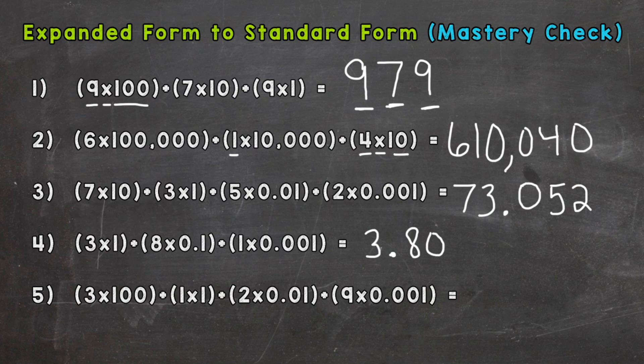Lastly here, we have a three with a value of 300, or a three in the hundreds place. We do not have any tens, we have one in the ones place, decimal, we do not have any tenths so we need a zero there, two in the hundredths, and then nine in the thousandths. So for number five, three hundred one and twenty-nine thousandths.